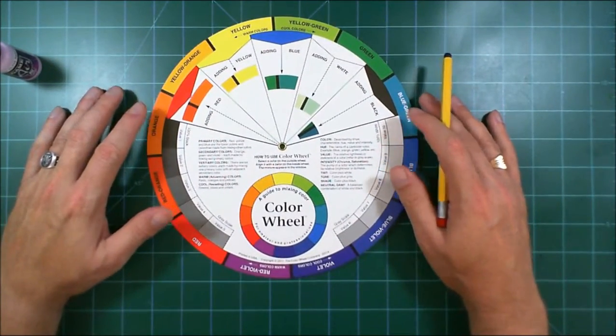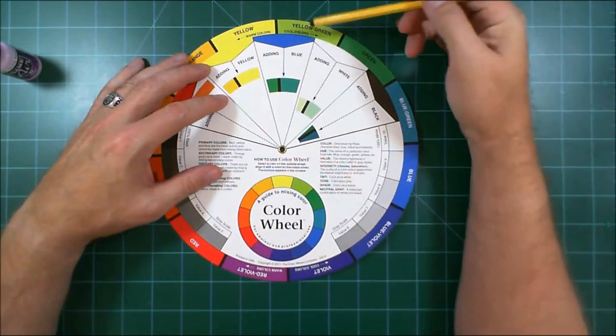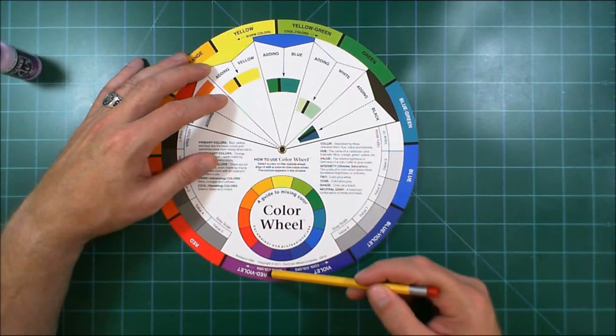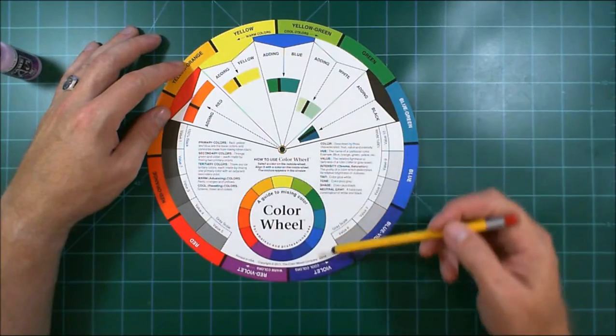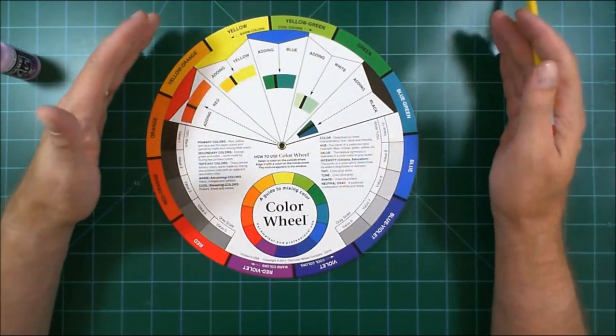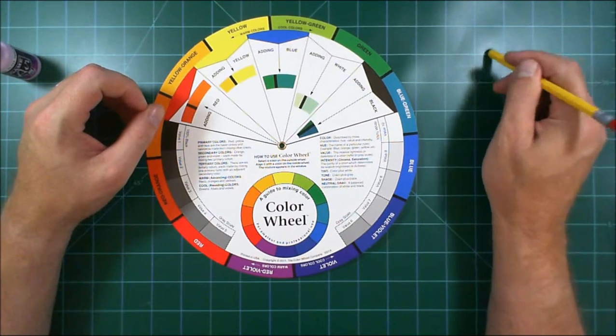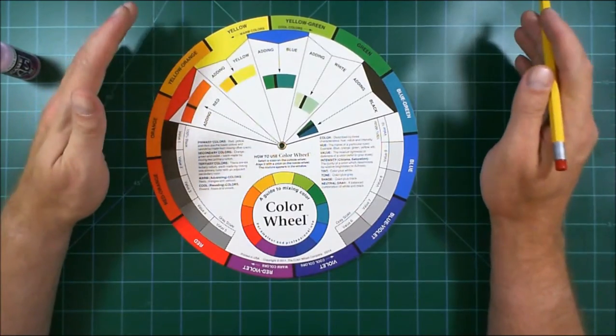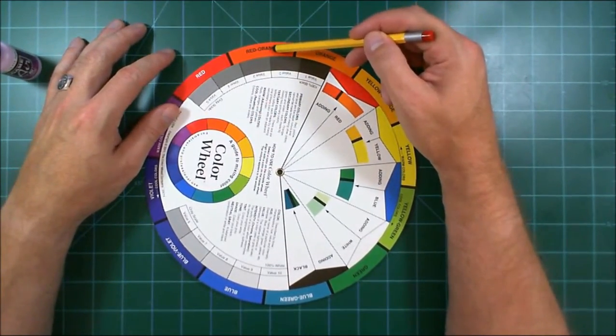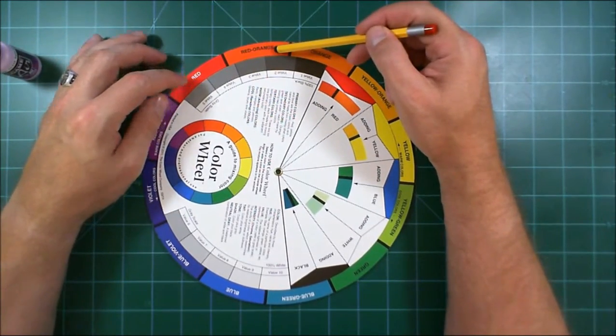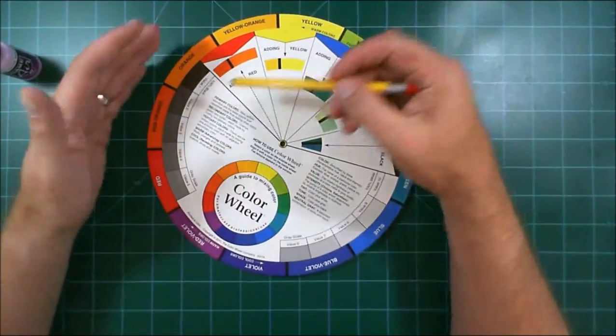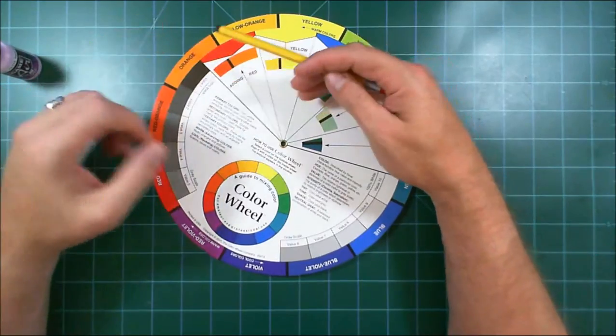The other thing this wheel shows is your warm and cold colors. Your cool colors begin with yellow-green and work all the way around to violet. As soon as red-violet begins, that becomes a warm color. Here you're seeing the warm spectrum and the cold spectrum of colors. When you study a color, you're looking for its hue, which is the primary color used to mix that color. For instance, if you think of rust, the primary color is probably orange. If it's darker rust, it's red-orange, so rust would be a warm color.